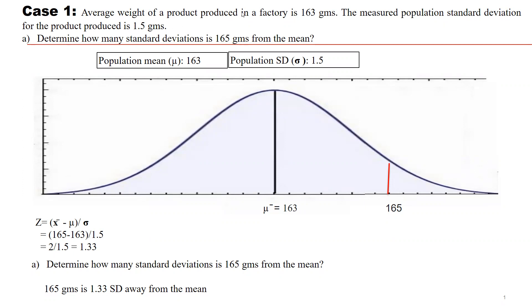Here is a very simple case. Average weight of a product produced in a factory is 163 grams. The measured population standard deviation for the product produced is 1.5 grams. How can we determine how many standard deviations is 165 grams from the mean?